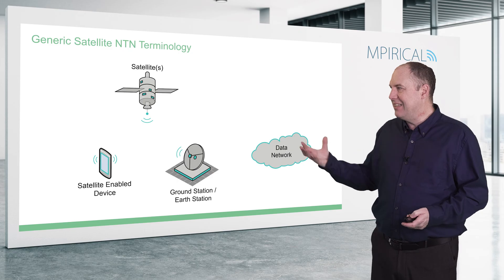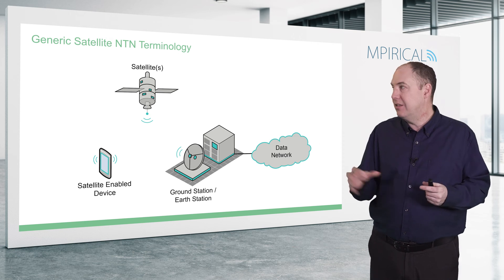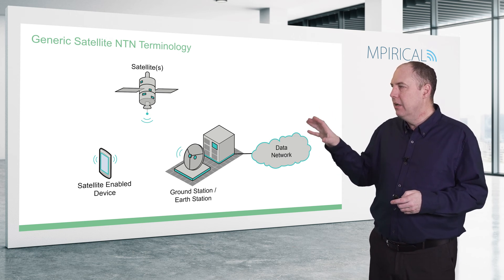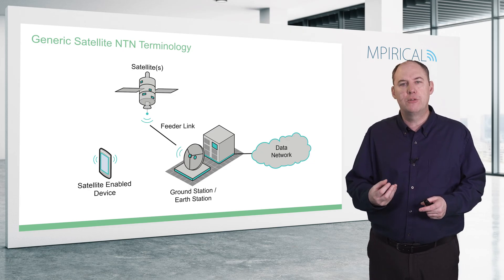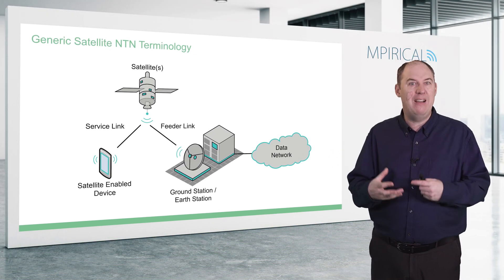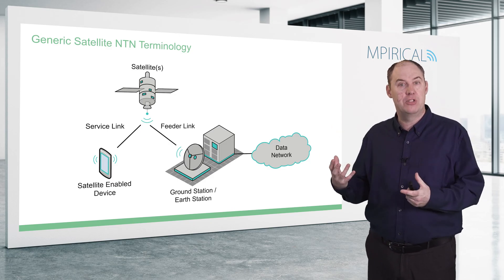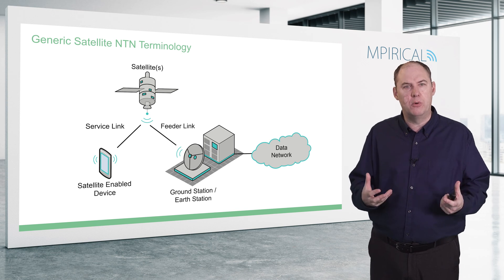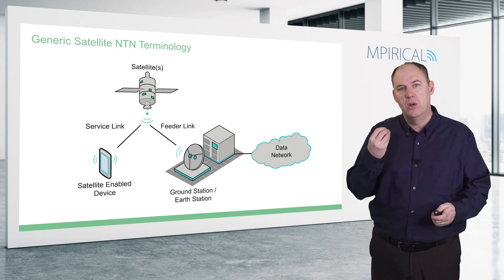From the earth station, we need to connect to the data network, so there may be other connectivity requirements at that location. Key terminology to be familiar with is the term feeder link — the feeder link goes from the earth station up to the satellite — and then from the satellite to the actual device is referred to as the service link. So we have a feeder link and a service link, and we'll be looking at how 5G fits onto this diagram in the NTN architecture.